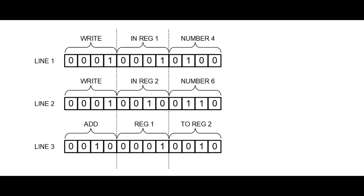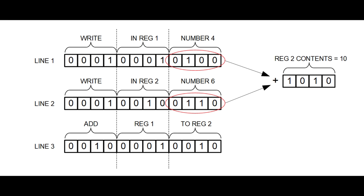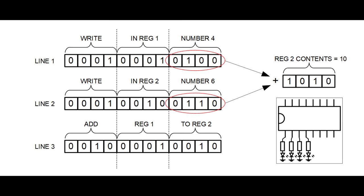So after executing these three lines of code, we get the sum of number 4 and number 6 in register 2, which is number 10 — since 1010 in binary equals 10 in decimal. If we wanted, we could then display this result using LED lights connected to the microcontroller. Of course, as mentioned, this is not an actual program, but it is an approximate example of how lines of code are executed by a microcontroller.